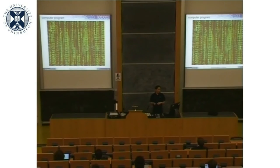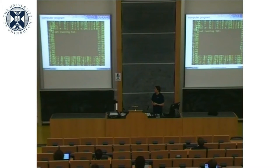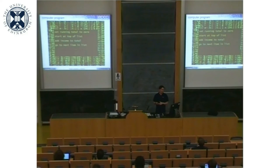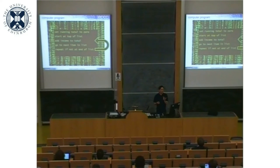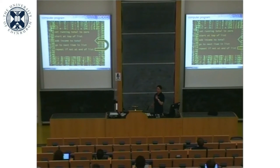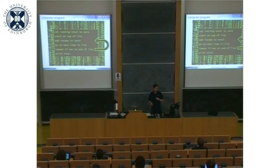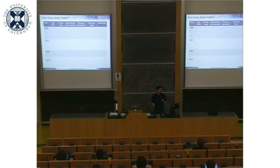I'm going to write a computer program to do that. I set a running total to zero, start at the top of the list, add the income to the total, go to the next item, and repeat if I'm not at the end of the list. In the loop, I have to do three things: add the income to the total, go to the next item, and check if I'm at the end. So that's three operations. The inner loop, which I have to do 7 billion times, takes three operations. The question is: how long does that take? What I'm going to try to illustrate is the evolution of computing technology since the early 70s.